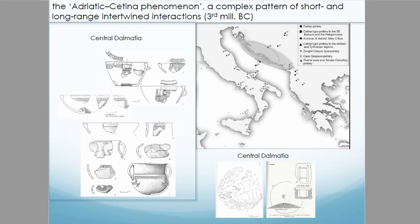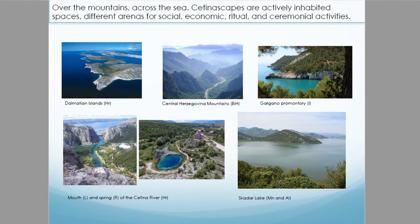Distribution maps indicate the spread of the Cetina evidences. I'm going to approach the Cetina phenomenon from the point of view of resources and their appropriation, and the consequent construction of different landscapes, which I call the 'Cetinascapes,' emphasizing the cultural and symbolic dimensions. Most of the conclusions you are going to see here are based on ceramic analysis, but not only.